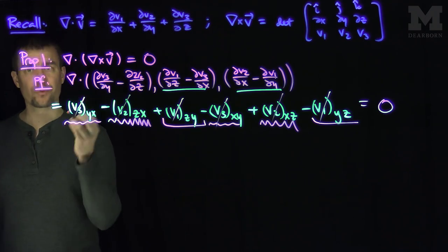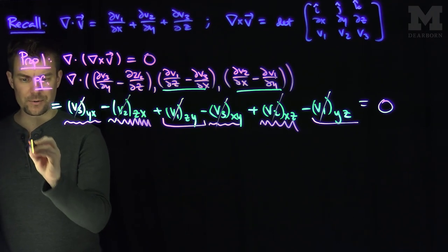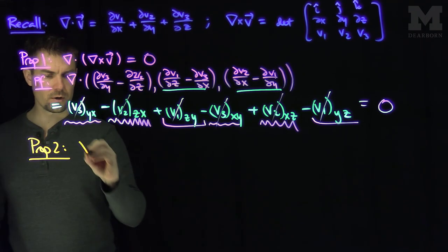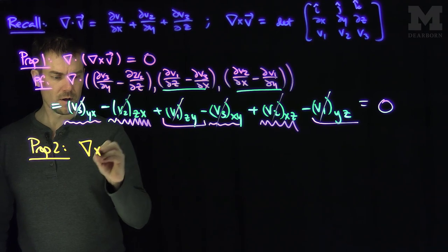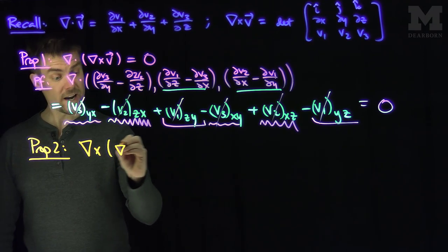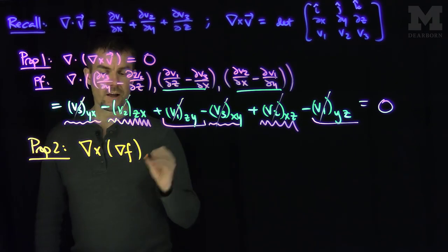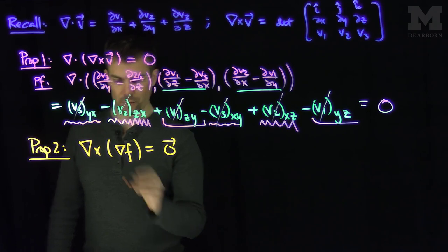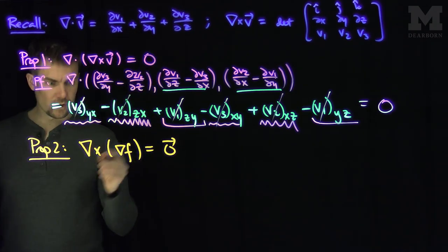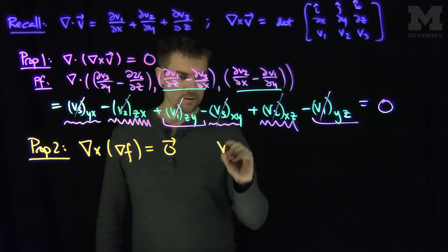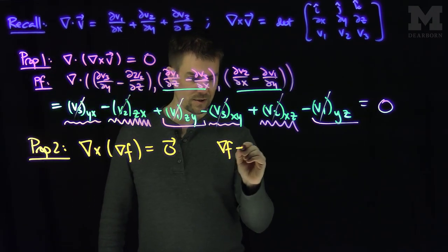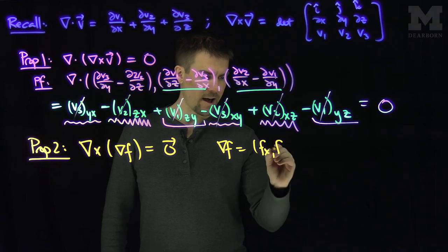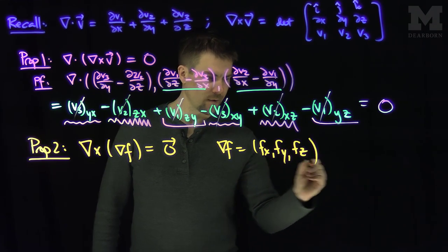This calculation was fairly long. We'll see using the permutation symbol and some vector notation that this becomes much easier later. Next, let's do the curl of a gradient — Proposition 2. Proposition 2 says that if I do the curl of the gradient of a scalar function f, this will be the zero vector. Remember, the gradient in Cartesian coordinates is (fx, fy, fz).